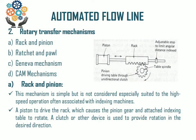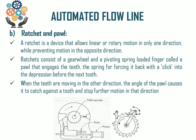The ratchet and pawl mechanism is one of the most popular and effective mechanisms used for locking purposes, allowing one-direction movement of the dial-shaped or circular table in the rotary Automated Flow Line mechanism. The ratchet and pawl device allows linear or rotary motion in one direction while preventing motion in the opposite direction.